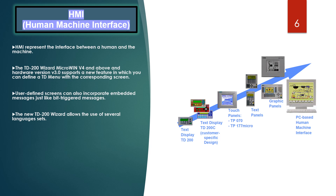The TD200 Visor also has options for language sets. The new TD200 Visor allows the use of several language sets, supporting online switching between them. This function makes it possible for operators and maintenance personnel to select the desired language in the TD menu and display text in that language. To use online language switching, you require a TD200 C version 1.0 or above, or a TD200 version 3.0 or above.